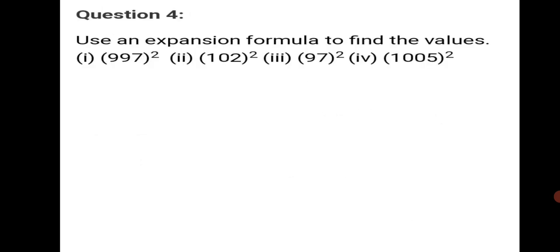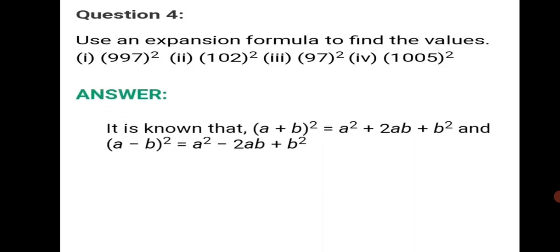Question 4: Use an expansion formula to find the values. We know the formula for (a+b)² or (a−b)². For 997², we write it as (1000 − 3)² since 997 is 3 away from 1000. We search for a number close to 100 or 1000 to apply the formula.